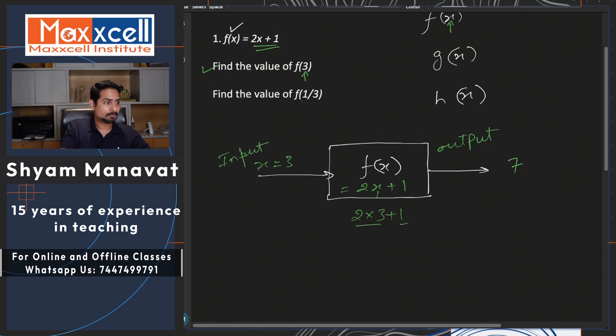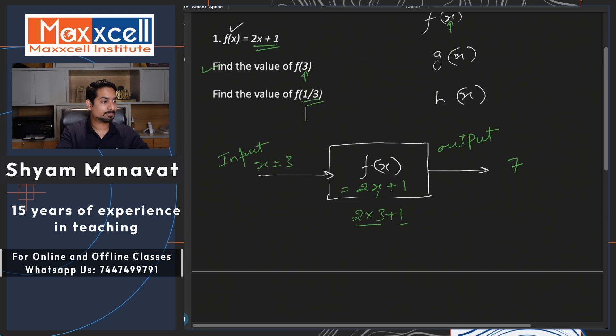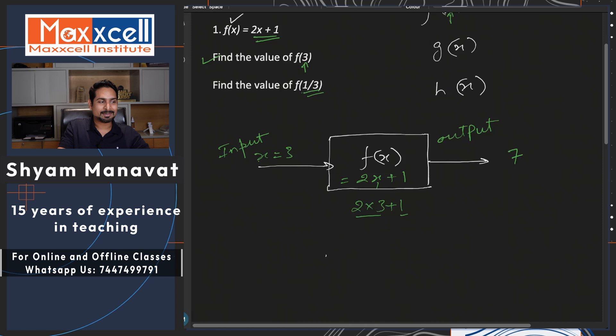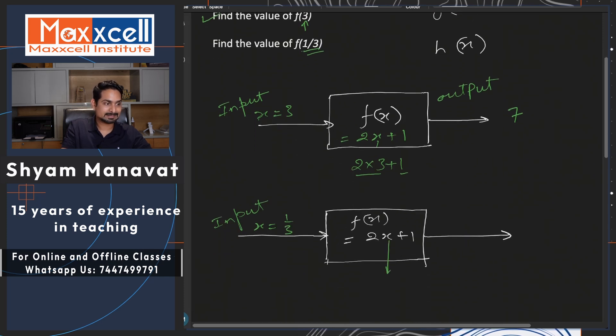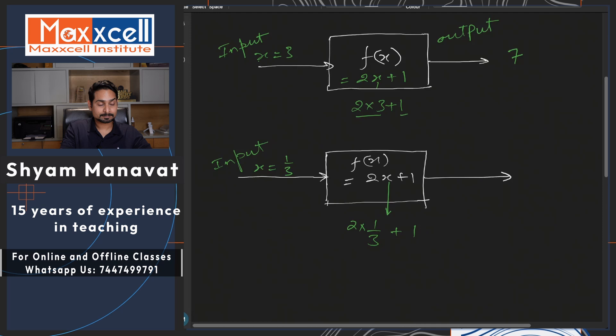Let us try once again. In case if you want to find out what is the value of f of 1 by 3 in this case. You do not have to draw this box in the exam, I am just making it look visually easy to understand. f(x) equal to 2x plus 1. So x is 1 upon 3. You need to substitute the value of x as 1 upon 3. It will look like 2 into 1 upon 3 plus 1. Simplify this further, thus 2 by 3 plus 1 will get you 5 by 3.